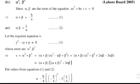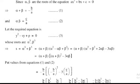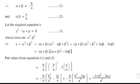Putting in the values of alpha + beta and alpha·beta: S = (-b/a)[(-b/a)² - 3·(c/a)] = (-b/a)[(b²/a²) - (3c/a)]. Taking LCM of a² and a gives a², so S = (-b/a)·[(b² - 3ac)/a²] = -b(b² - 3ac)/a³.